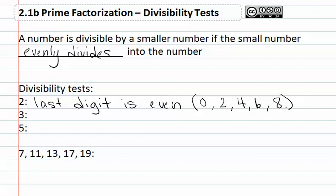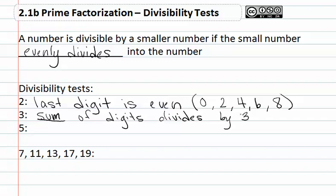For a number to be divisible by 3, the sum of the digits must divide by 3. For it to be divisible by 5, the last digit needs to be a 5 or a 0.